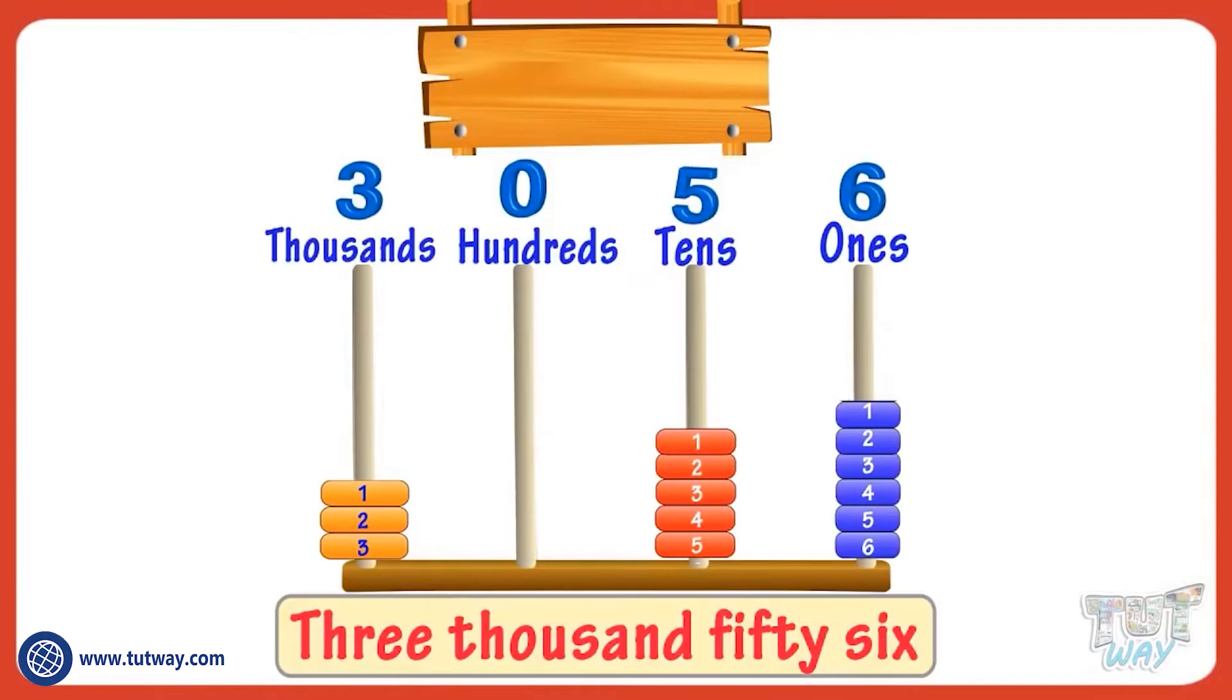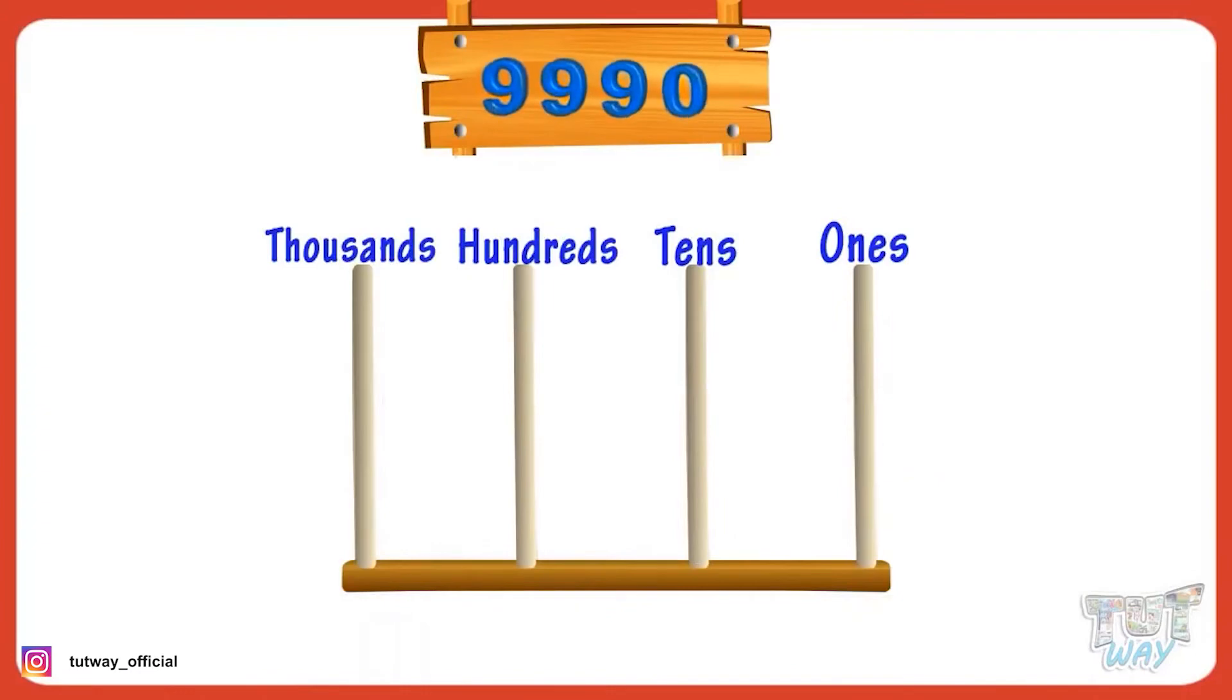Let's take another example. Here again we have a four-digit number. We can represent the number like this. It shows zero ones are there in the number.